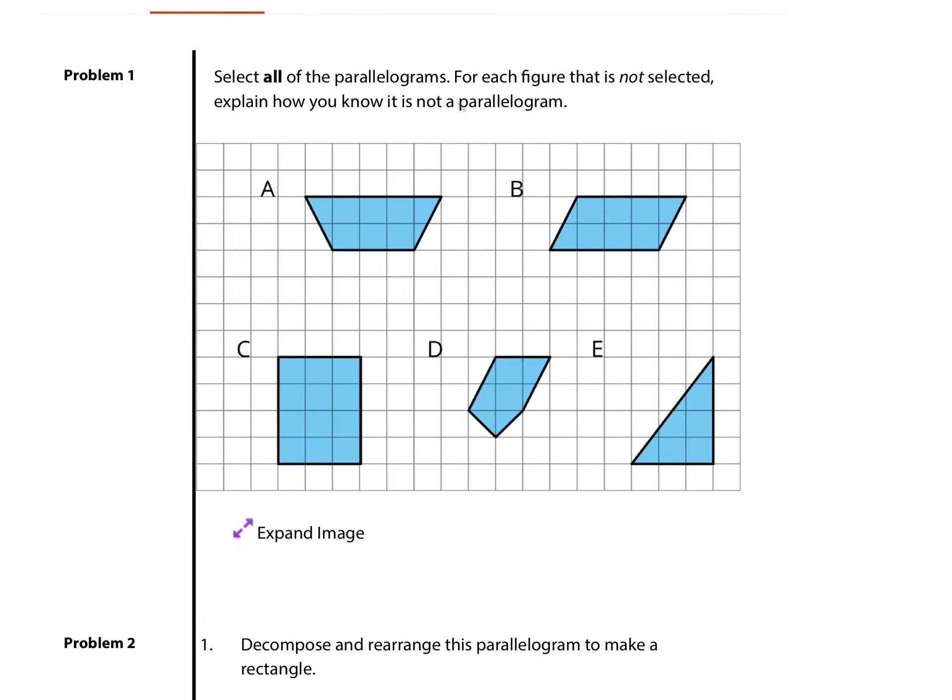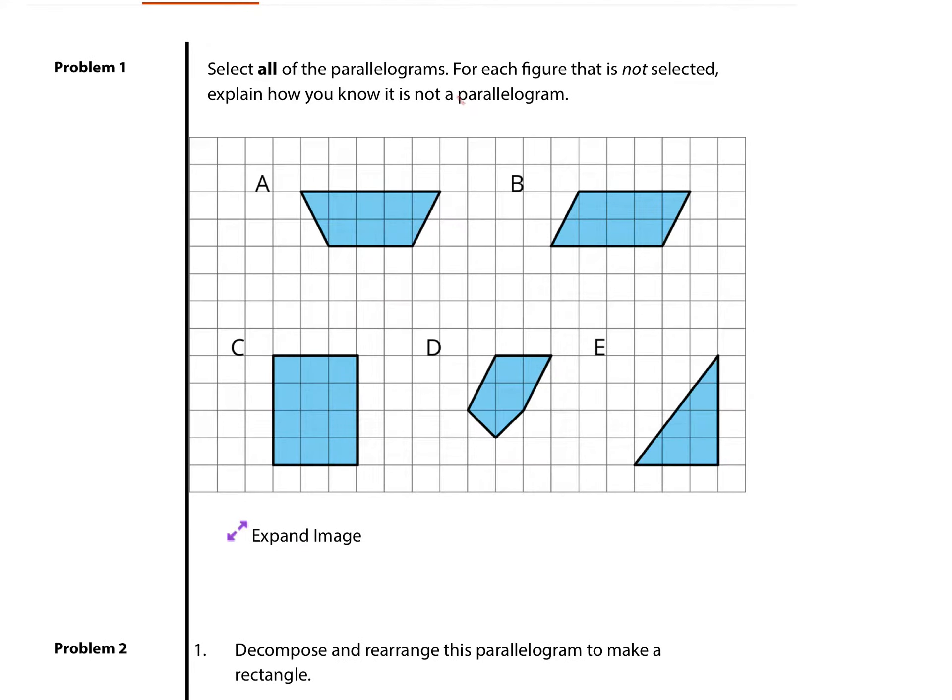In problem 1, we'll start off by selecting all parallelograms, and for each figure that is not selected, explain how you know it is not a parallelogram. We'll start off by selecting the parallelograms, and those are B and C.